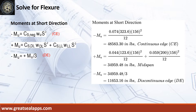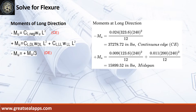Positive moments at short direction: negative moment at continuous edge is 48,563.3 inch-pounds; positive moment at mid-span is 34,959.48 inch-pounds; negative moment at discontinuous edge is 11,653.16 inch-pounds. Moments at long direction: negative moment at continuous edge is 37,278.72 inch-pounds; positive moment at mid-span is 15,899.52 inch-pounds.